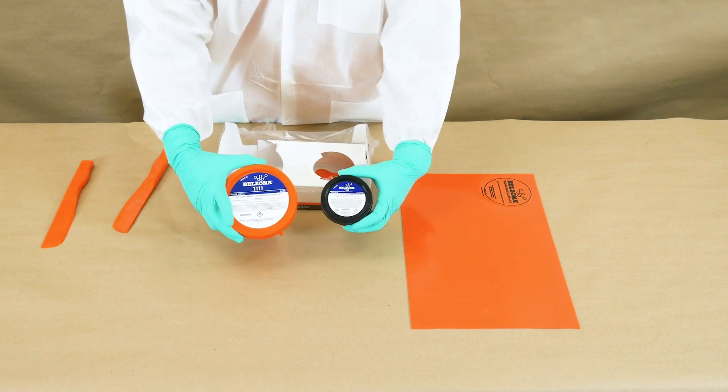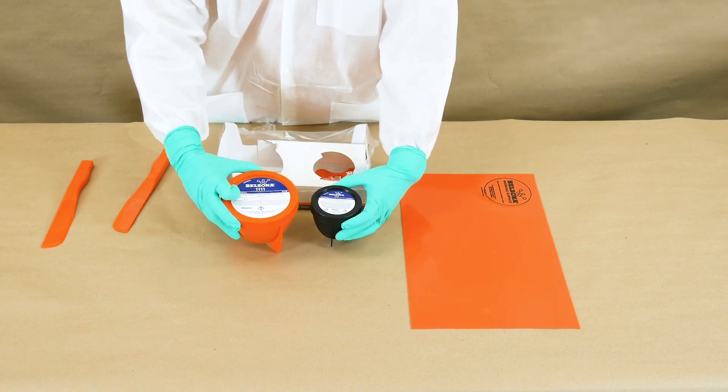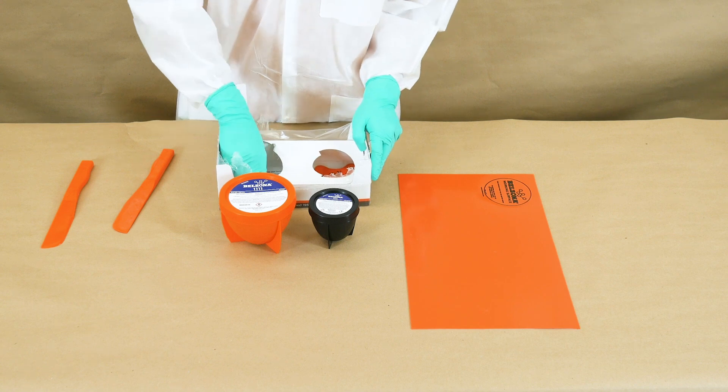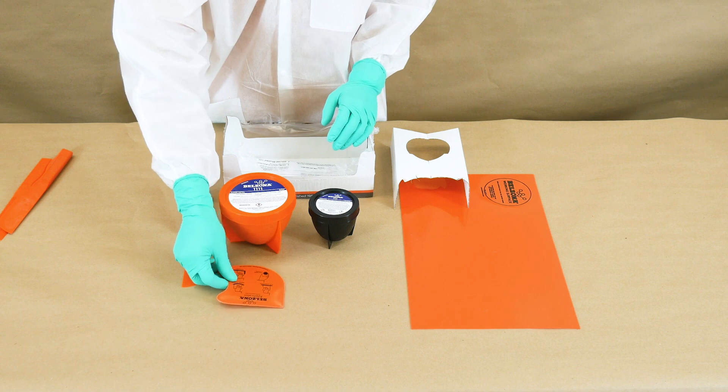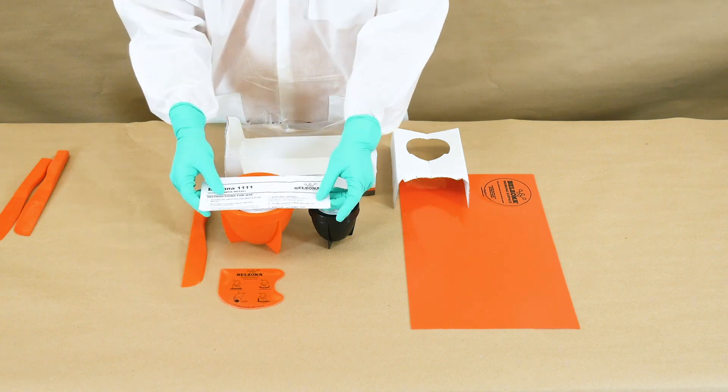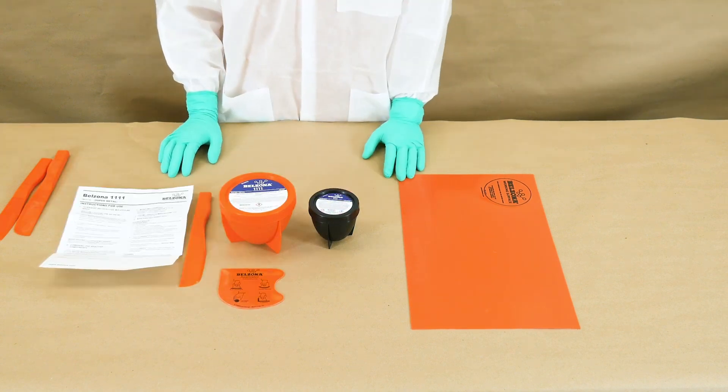For the mixing you will need two components: base and solidifier of Belzona 1111, a Belzona working surface, a spatula, and an applicator. Each product package comes with manufacturer's instructions for use.